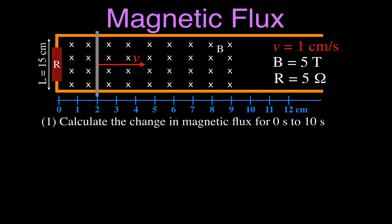The first thing we're going to do is calculate the change in the magnetic flux from 0 to 10 seconds. To find the change, we need the initial and the final. The initial magnetic flux is simply the initial area of the coil times the magnetic field strength. Now the magnetic field strength doesn't change, but the area is going to change. You often see this with cosine theta next to it, but the magnetic field and the plane of the coil are at right angles, so the angle between the perpendicular to the face of the coil and the magnetic field is 0, and cosine of 0 equals 1. We just multiply the area times the magnetic field.